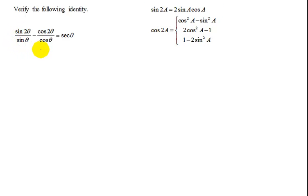So we want to simplify the left hand side. So my left hand side of this identity is sine of 2 theta over sine theta minus the cosine of 2 theta over cosine theta.